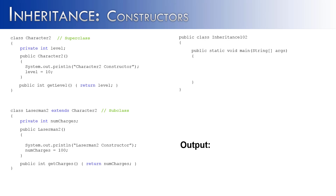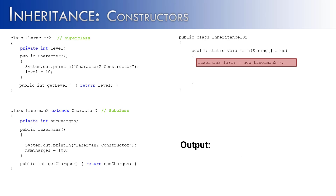Now why did I have the System.out.println statements inside of the constructor saying 'character2 constructor' and 'Laserman2 constructor'? Let's see what happens when we create an object of the Laserman class — Laserman2 laser equals new Laserman2. The output might be interesting to you because what it's going to say is 'character2 constructor' and then 'Laserman2 constructor', meaning somewhere in there it's calling the superclass constructor even though we're only creating an object of the subclass. Let's go through the program flow and see how this inherited relationship is working with the constructors.